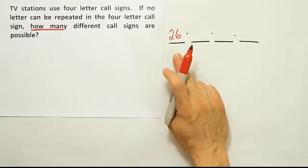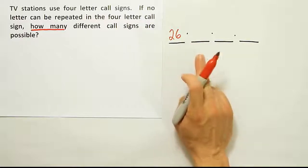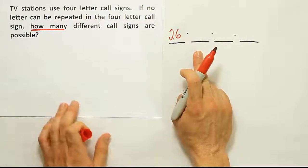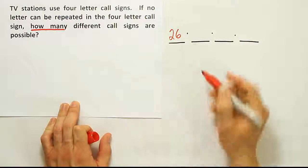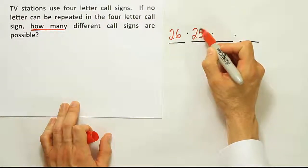But after that, once you've chosen a letter, let's say you choose the letter D. If you choose the letter D, then you no longer have 26 choices for the next one because it says no letter can be repeated. So that means you will only have 25 choices for the next letter.